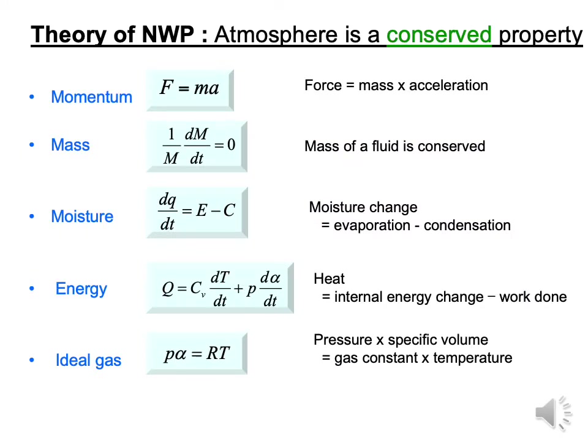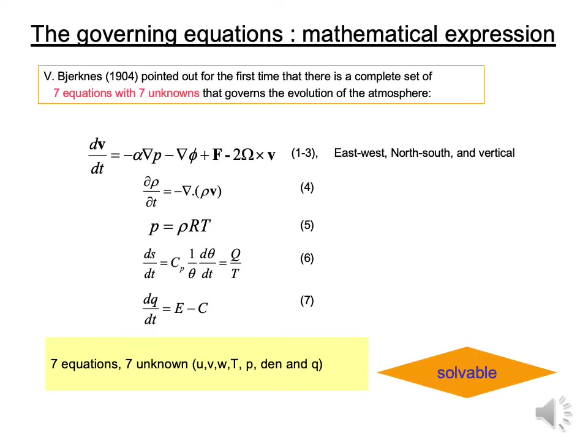In addition, the atmosphere is a conserved system. Momentum, mass, moisture, and energy are conserved. Also, air is regarded as an ideal gas. The first person who designed the governing equations was Bjerknes in 1904. Three components — winds, density, pressure, temperature, and moisture — give seven equations for seven unknowns, which is solvable.